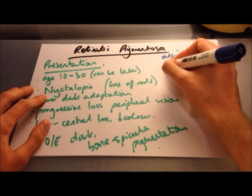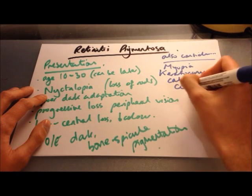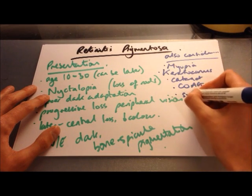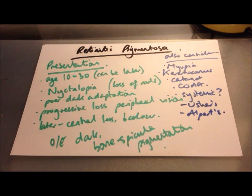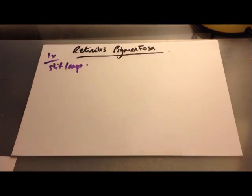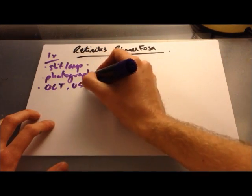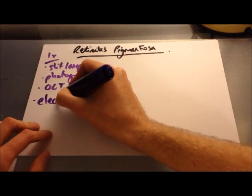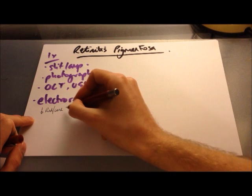Conditions associated with retinitis pigmentosa include myopia, keratoconus, cataract, chronic open-angle glaucoma, and systemic conditions. Usher syndrome is a rare genetic disorder with visual impairment and hearing loss. Alport syndrome is a hereditary nephritis characterised by glomerulonephritis, kidney disease, and hearing loss, and can also affect the eye. To investigate, perform a full slit lamp exam and retinal photography, and consider optical coherence tomography, ultrasound, and fluorescein angiography. The key diagnostic test is an electroretinogram, which measures rod and cone function across the entire retina — in retinitis pigmentosa there is reduced rod and cone function, usually with predominant rod loss.